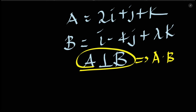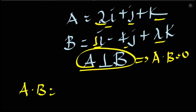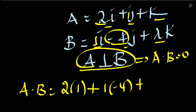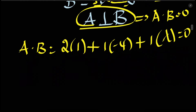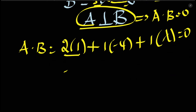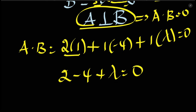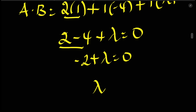So the dot product of A and B gives us the x, y, and z components: 2 times 1 is 2, 1 times negative 4 is negative 4, plus lambda equals zero. Therefore, 2 minus 4 plus lambda equals zero, which means lambda equals 2.